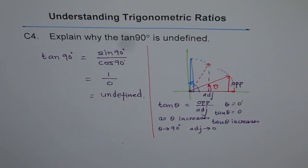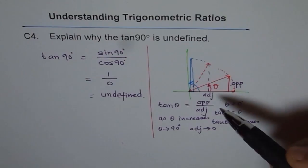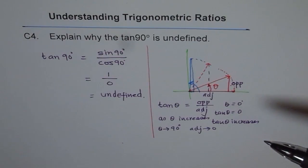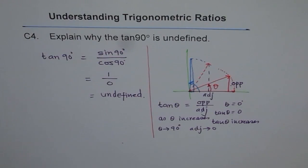I hope you understand how, with the variation of angle, tan varies. What you can do is the same exercise: try to understand, by the variation of this angle, how sine and cosine vary, and what maximum values they can take. Thank you.